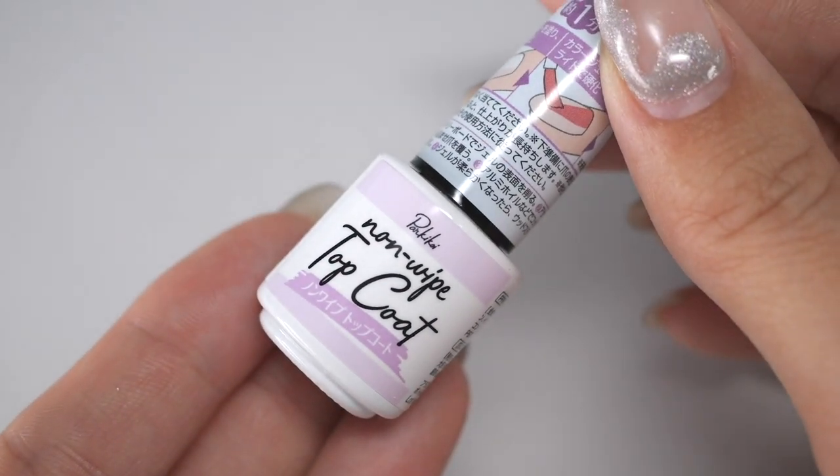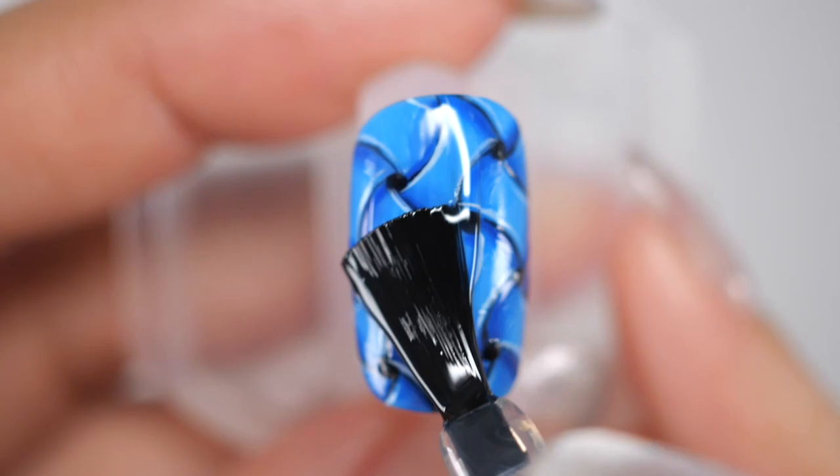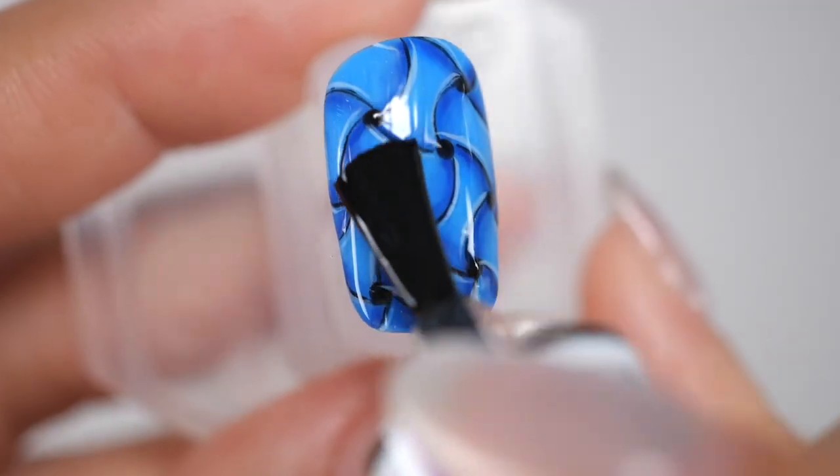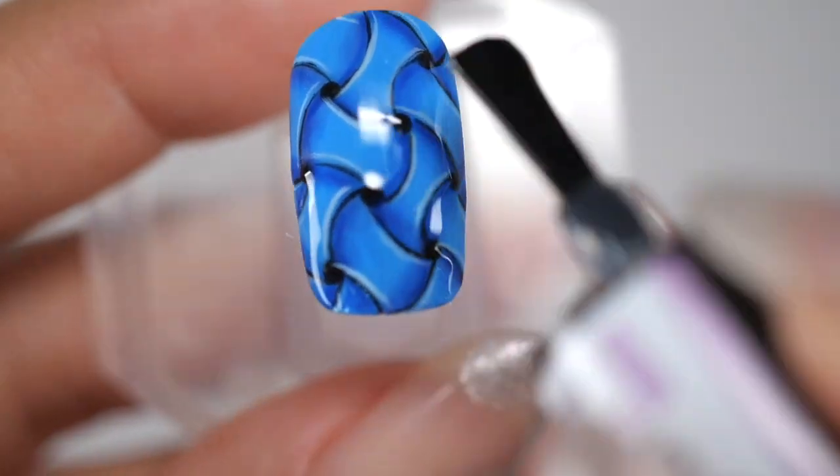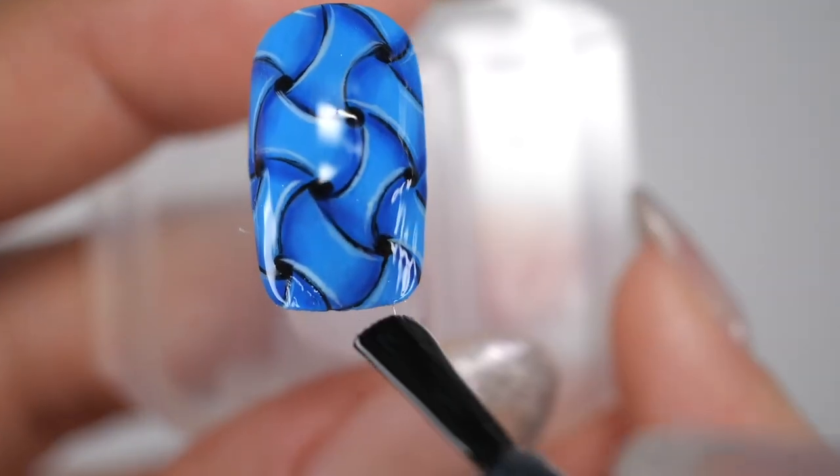Finally, apply a non-wipe topcoat to the entire surface. Since unevenness will appear in the area where dots are drawn, induce the topcoat to eliminate the unevenness.